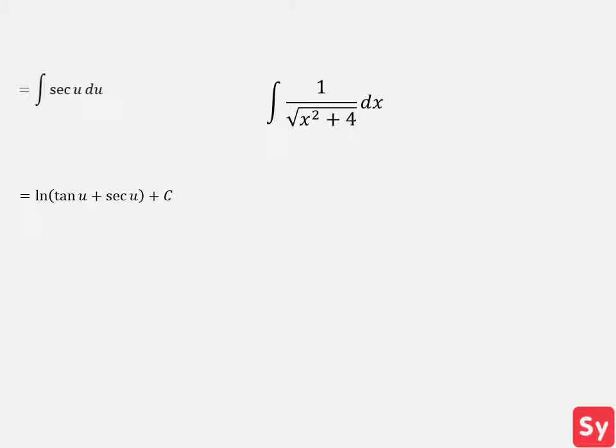Don't forget to rewrite the answer in terms of x. We had set x equal to 2 times tangent of u. That means u equals the arctangent of x over 2.